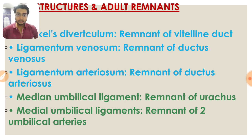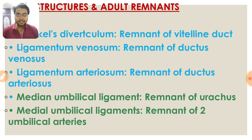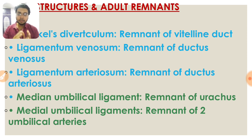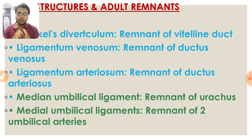Meckel's diverticulum is basically a remnant of the vitelline duct. Ligamentum venosum is a remnant of ductus venosus. Ligamentum arteriosum is a remnant of ductus arteriosus. So only 'ligamentum' is changing to 'ductus': ligamentum venosum → ductus venosus, ligamentum arteriosum → ductus arteriosus.